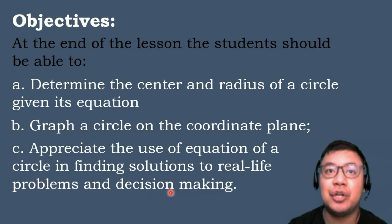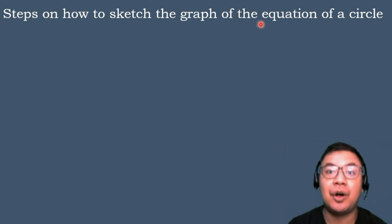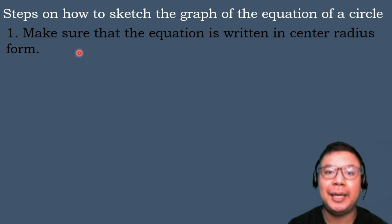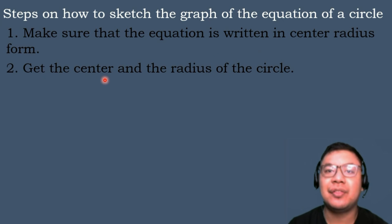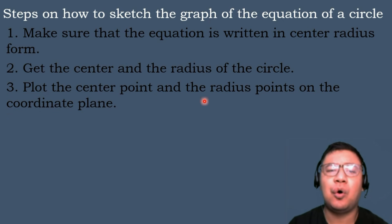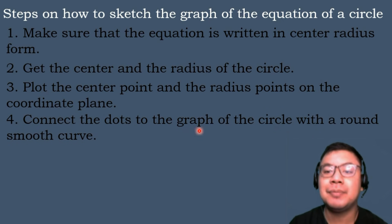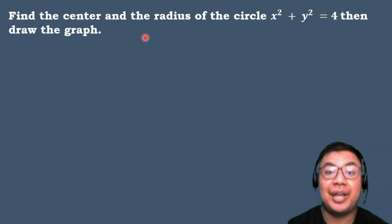These are the steps on how to sketch the graph of the equation of a circle. First, make sure that the equation is written in center-radius form. Next, get the center and the radius of the circle. Third, plot the center point and the radius points on the coordinate plane. The last step is to connect the dots to form the graph of the circle with a round smooth curve.